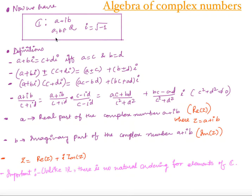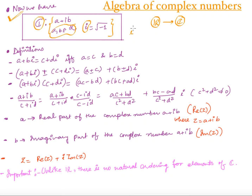Hello friends, welcome to this fourth video on complex analysis. In the last video we saw why we need to expand the set of real numbers to the set of complex numbers. We define the set of complex numbers, denoted by C, as the set containing numbers of the form a plus iota b, where a and b are real numbers and iota is the square root of minus one. Whenever we have iota squared, that equals minus one.